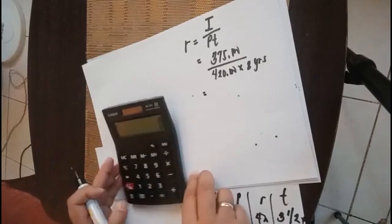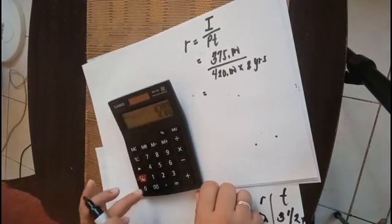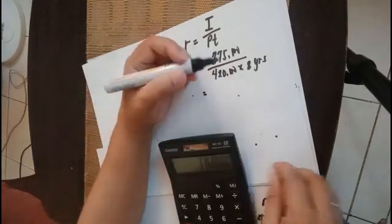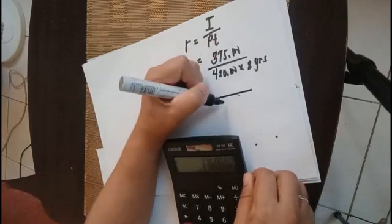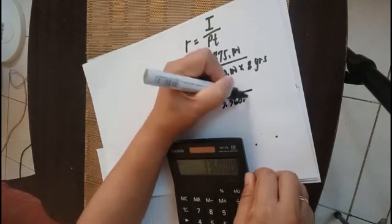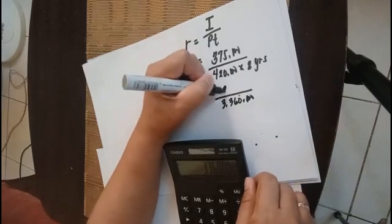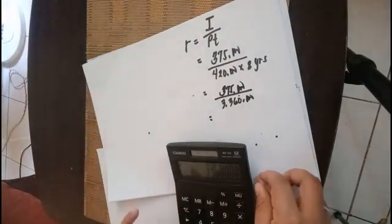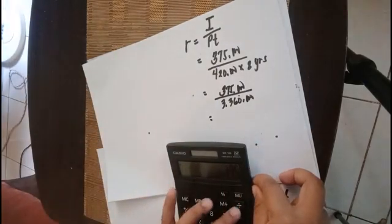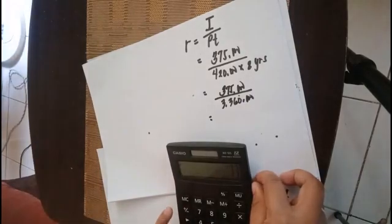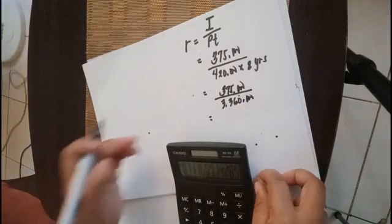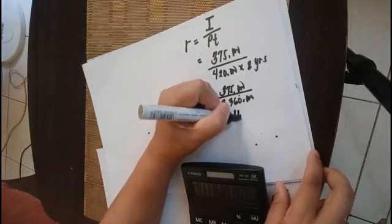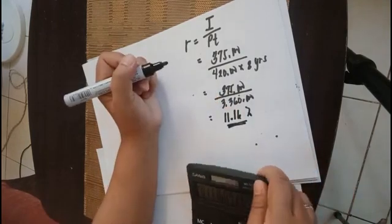We compute the denominator first: four hundred twenty thousand multiplied by eight years equals three million three hundred sixty thousand. Then we divide the interest of three hundred seventy-five thousand by three million three hundred sixty thousand, giving us eleven point sixteen percent — per month, which is quite high.